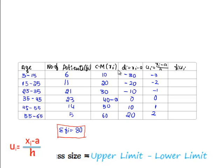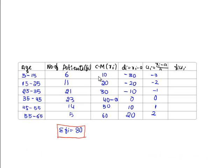As we have reduced the value of Xi to UI, we shall find the product of Fi and UI. 6 into minus 3 is minus 18; 11 into minus 2 is minus 22. And similarly, if we multiply, we get minus 21, 0,